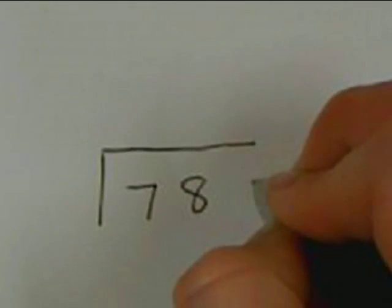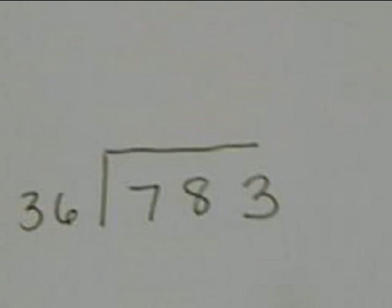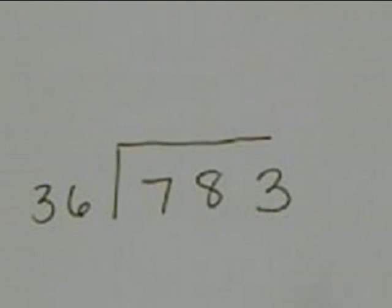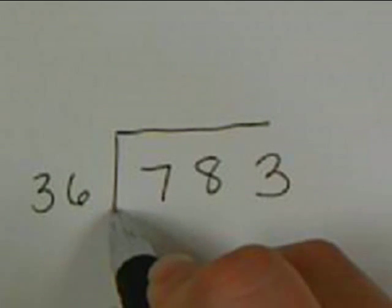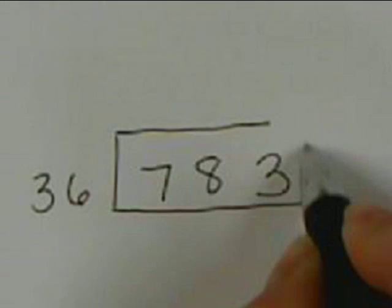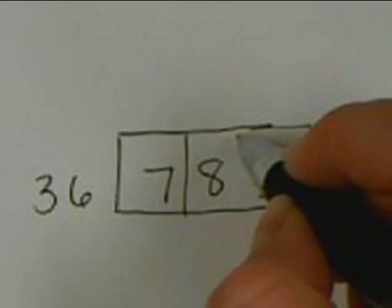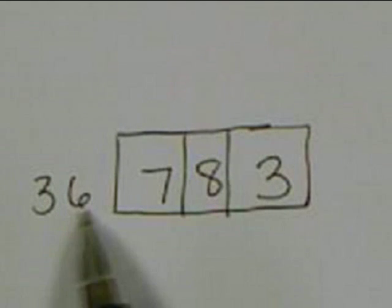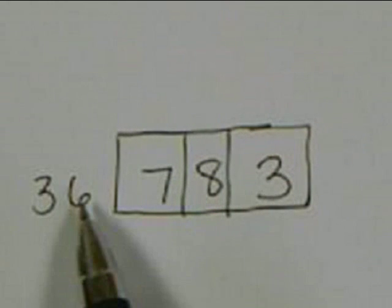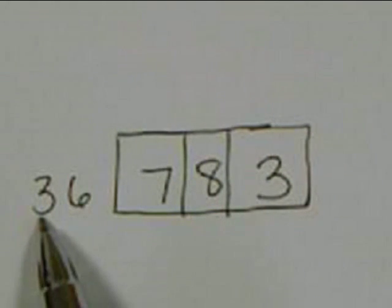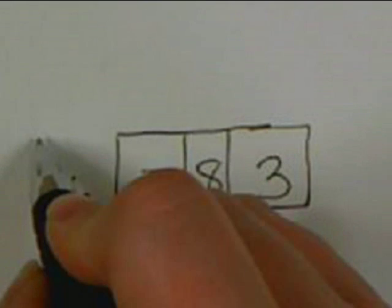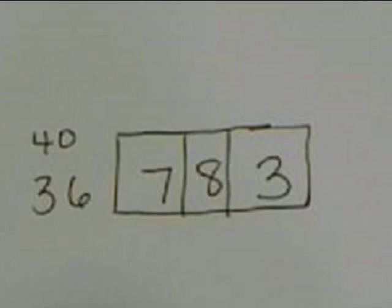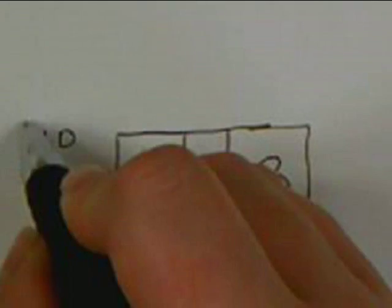783 divided by 36. For this problem I'm going to box up my numbers, then I'm going to estimate. 6 is bigger than 5 so the 3 will round to a 4 — 36 will round to 40. So 40 is the magic number that I'm going to work with.